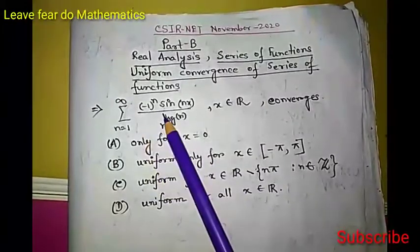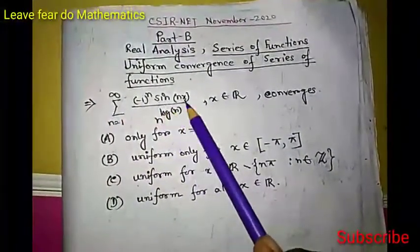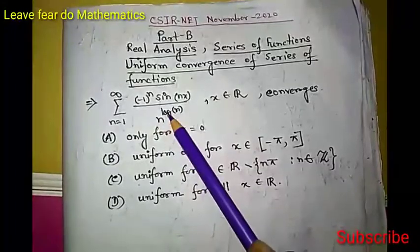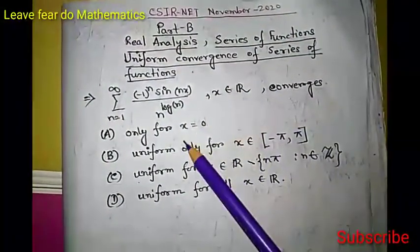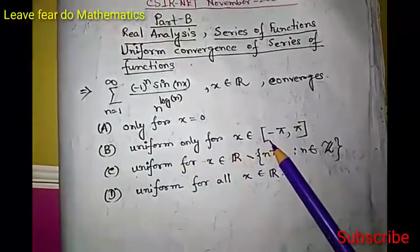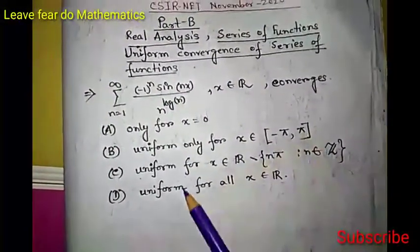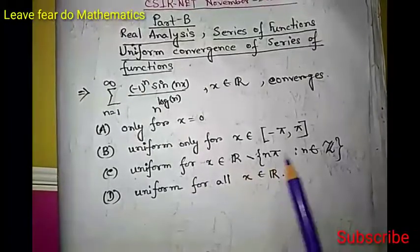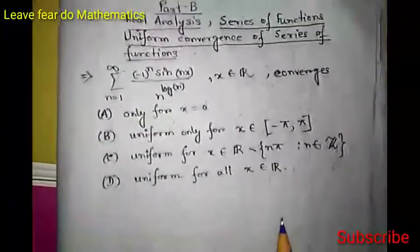The problem gives the series: sum from n=1 to infinity of (-1)^n * sin(nx) / n^(log n). The options are: it converges only for x=0; it converges uniformly only for x in [-π, π]; it converges uniformly for x in ℝ minus {nπ}; and it converges uniformly for all x in ℝ.